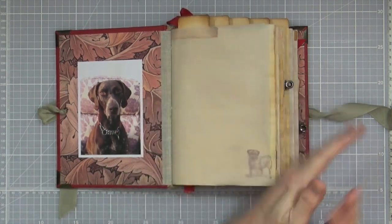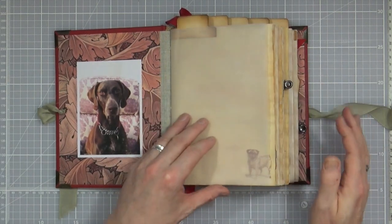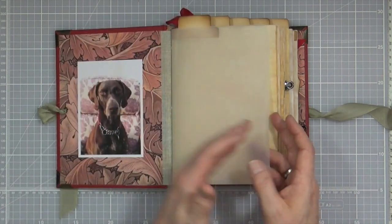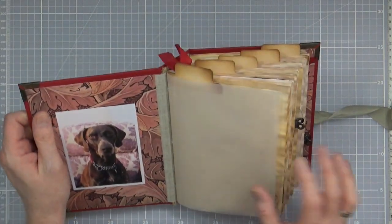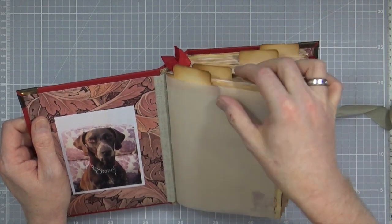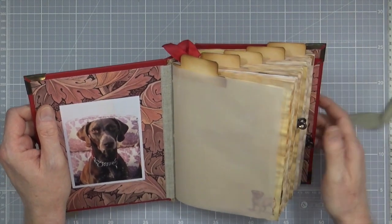Now all of the signatures in this journal, there are five signatures and they all have vellum as the first page. As I did with my previous one, each one of the signatures has a file tab across the top to make it easy to open and identify where you are in the journal.